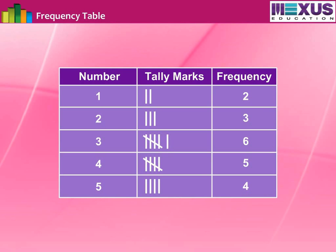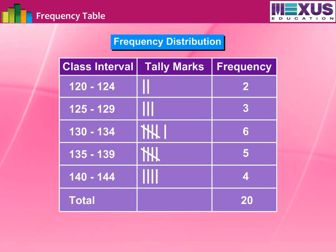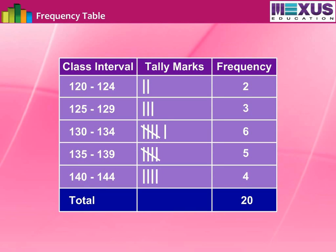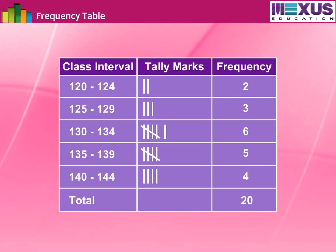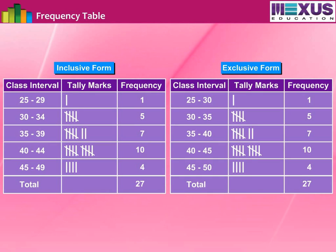If the values of the variable are given using different classes and the frequencies are marked against the respective classes, we get a frequency distribution. All the frequencies are added and the number is written as the total frequency for the entire intervals. This must match the total number of data given. This process is called tabulation of data. Have a look at the frequency table in an inclusive form and an exclusive form.